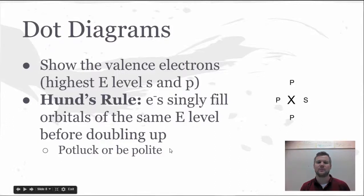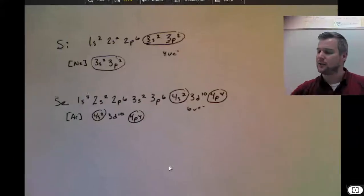They're going to fill a single orbital with one electron if there's other same energy level orbitals available. One way to think of this is just being polite. Or if you're at a potluck, make sure that you only have a first helping before everyone else gets a second helping. So distribute your electrons.